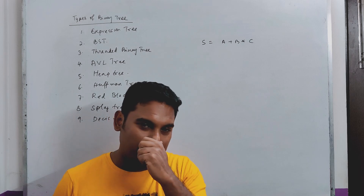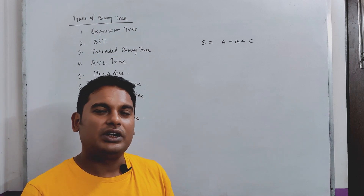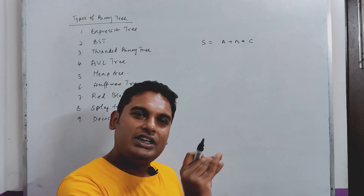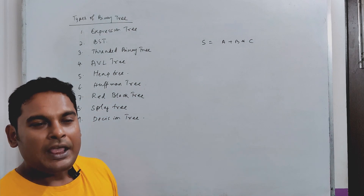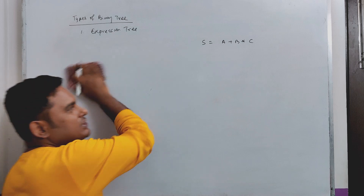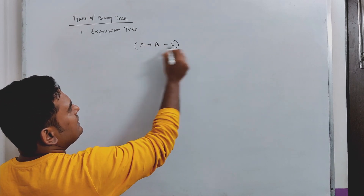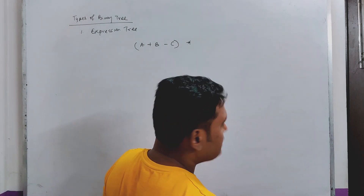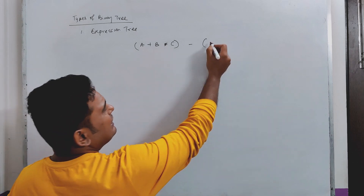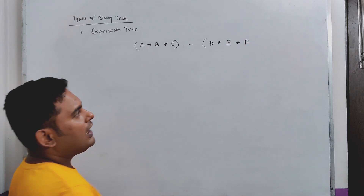When we represent the expression tree, let us consider an expression: (a + b * c) minus (d * e + f), all divided by g.